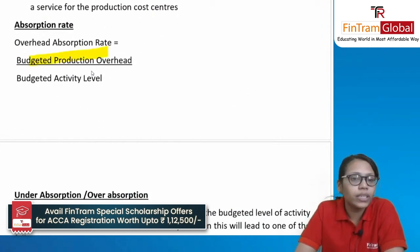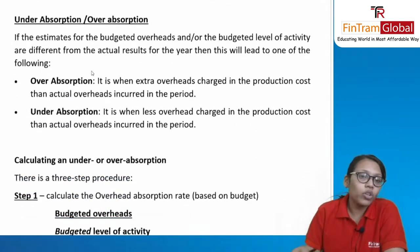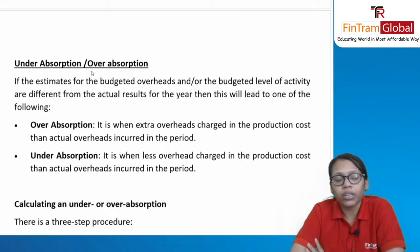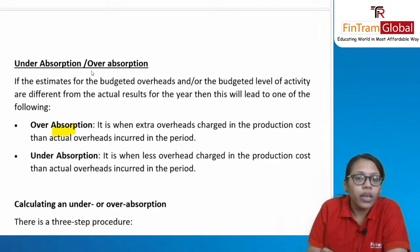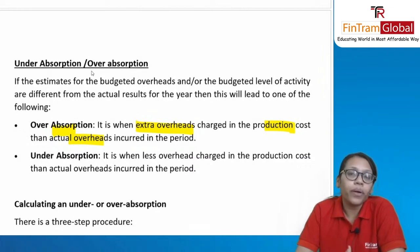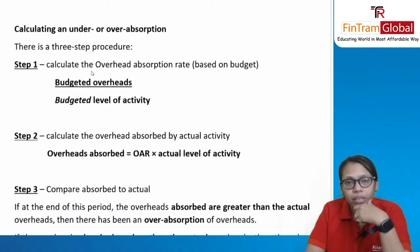The overhead absorption rate (OAR) = budgeted overheads ÷ budgeted activity level. The activity level base can be machine hours, direct labor hours, or number of units produced. Under/over absorption: absorbed overhead = OAR × actual activity level. If absorbed overhead is more than actual overhead, it is over absorption; if absorbed overhead is less than actual overhead, it is under absorption.